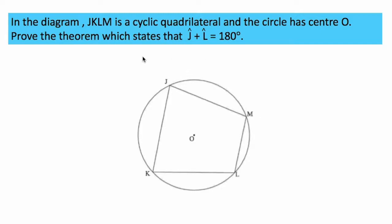In a question paper it might be phrased like this: In the diagram, JKLM is a cyclic quadrilateral and the circle has center O. Prove the theorem which states that angle J plus angle L is equal to 180 degrees. Then it will be given a drawing like that. Then you need to follow the steps of proving any theorem. You're supposed to write what you are required to prove.